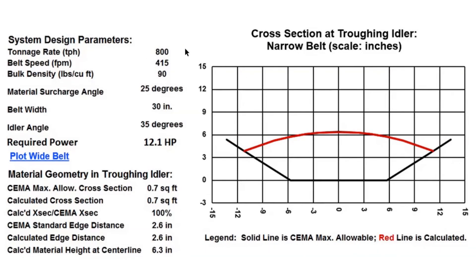Compare that with the option of speeding the conveyor from 300 feet per minute to 415 feet per minute. Note that 800 tons per hour can be handled on a 30 inch wide belt with the same troughing idlers as before at the faster speed. And it would adhere to 100% of the CEMA recommended cross section. An edge distance of 2.6 inches would be held, and the power would increase to 12.1 horsepower.